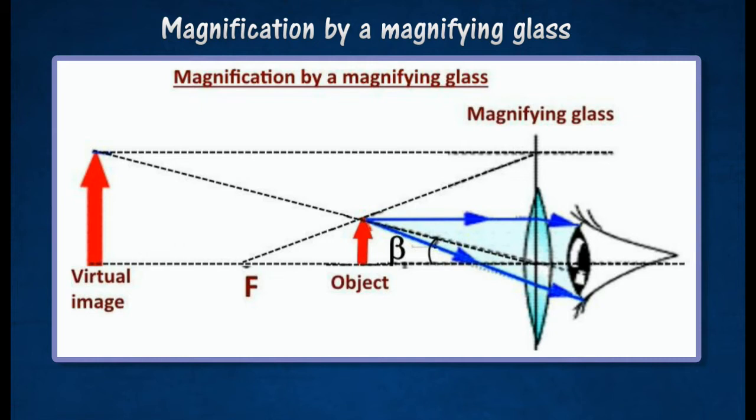A magnifying glass enlarges the image of an object by increasing the visual angle of the eye when the object is viewed. When the object is placed nearer than the focal length of the magnifying glass, the visual angle beta subtended by the image is enlarged.